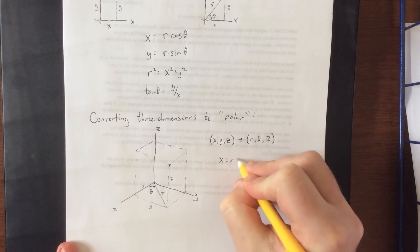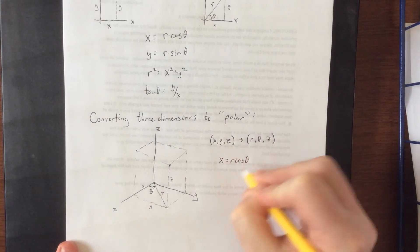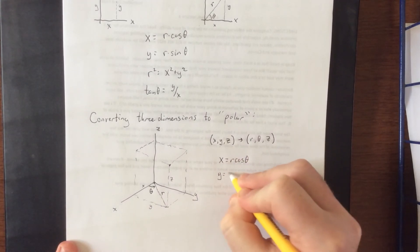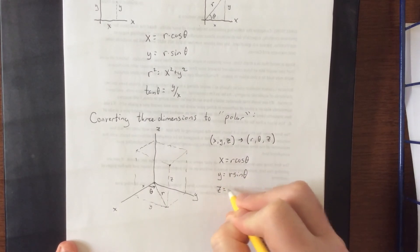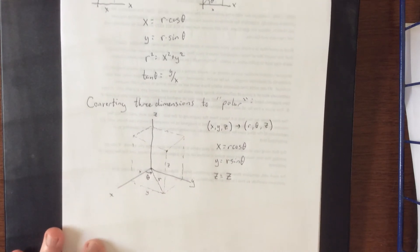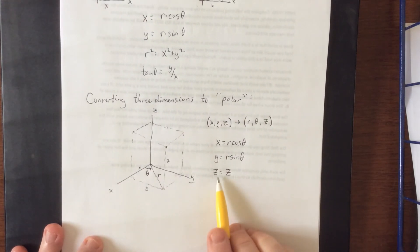So, what we would do is we would say that the ordered triple x, y, z is going to be converted into the ordered triple r theta z, through the use of the following conversions. x is going to be equal to r times the cosine of theta, y is equal to r times the sine of theta, and for z, there is no conversion whatsoever. So, frequently you'll see it written in this form, where we actually state that z is just going to stay as z.